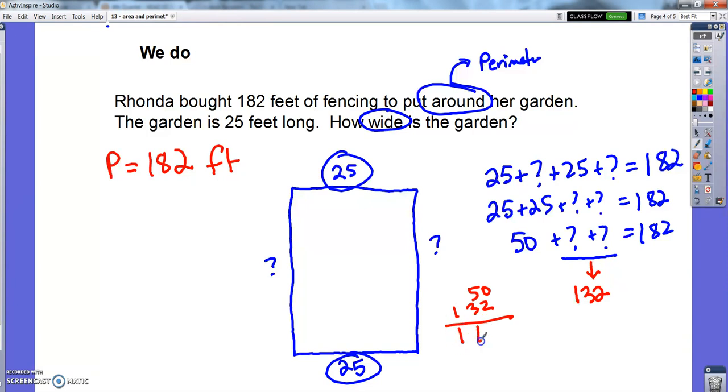Because if I had 50 plus 132, that would get me to 182, which I need, right? So it's 132 for both of them together. But if they're both together 132, then each something is only half of that. Each side is only half of that 132. So I need to know what half of 132 is. So let's go figure that out.